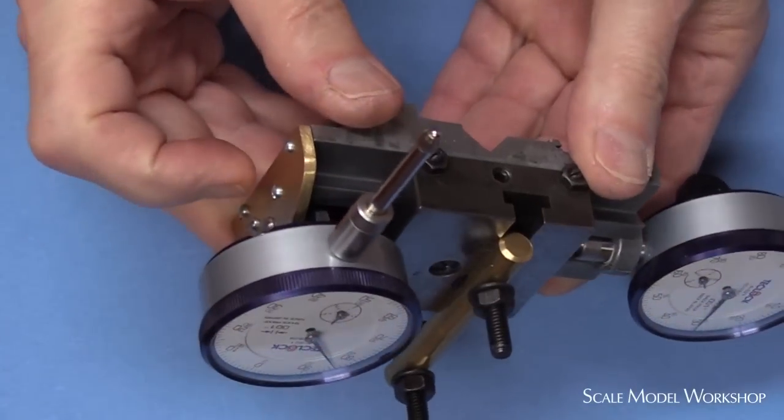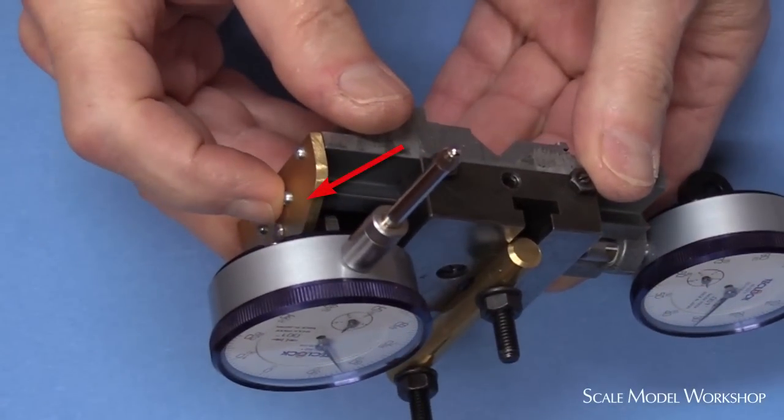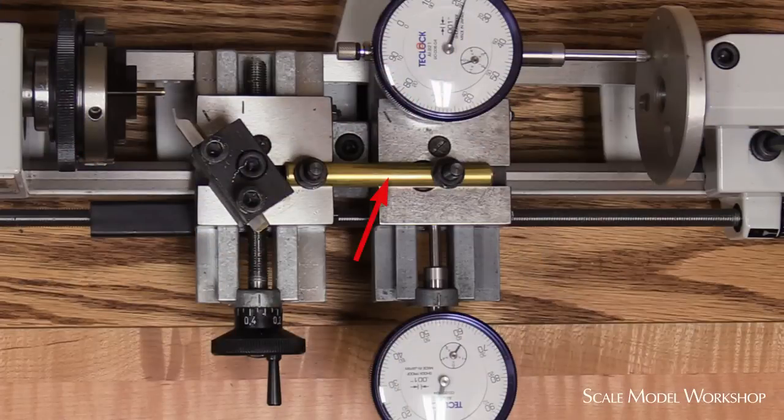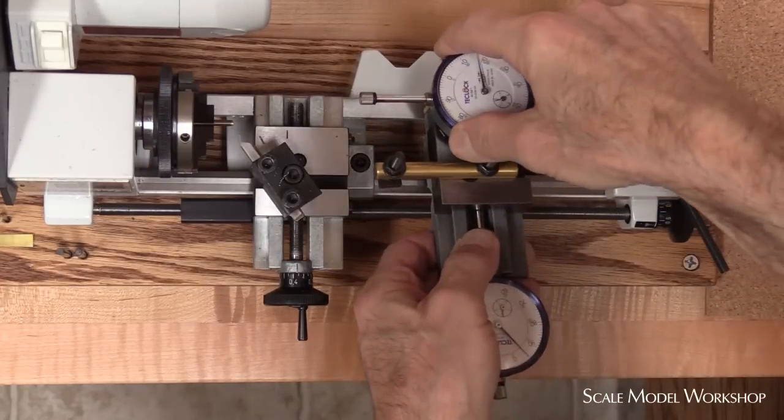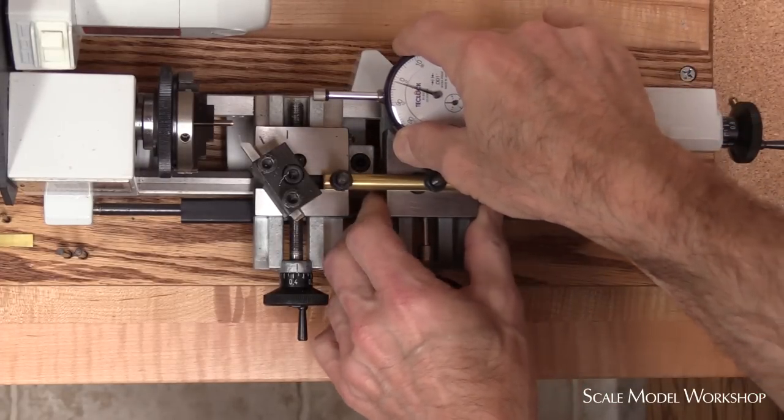The second dial indicator was mounted to the back of the trolley with a brass plate. A simple brass rod provides a solid link between the two. To mount the trolley, I simply line up the cross feeds and secure the linking rod.